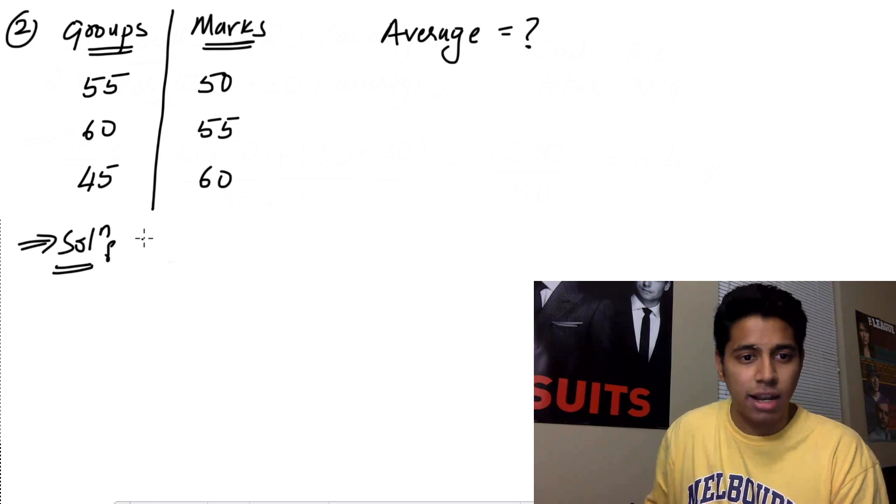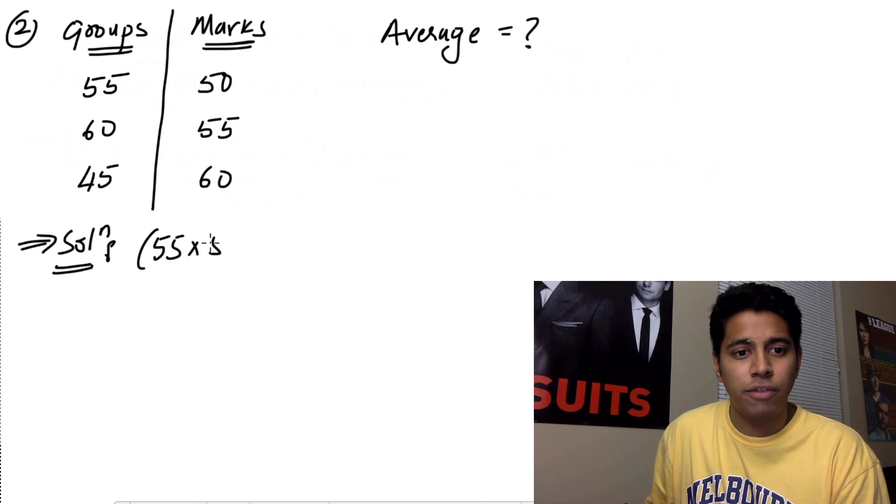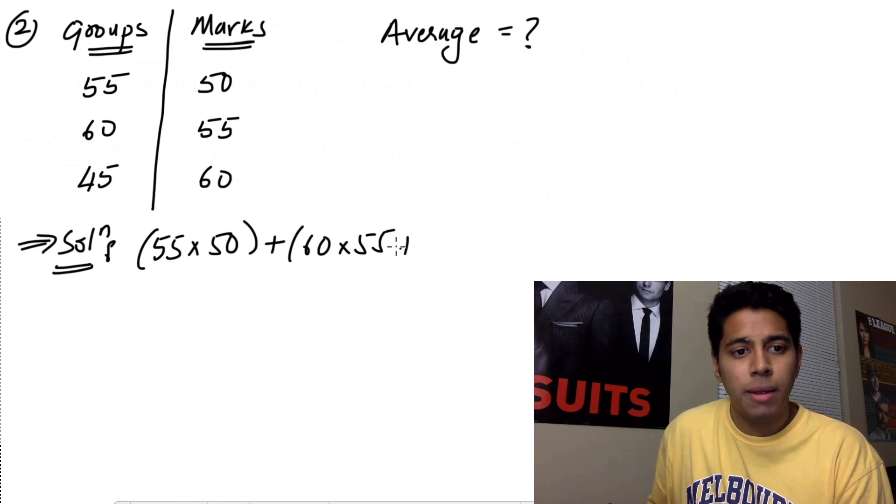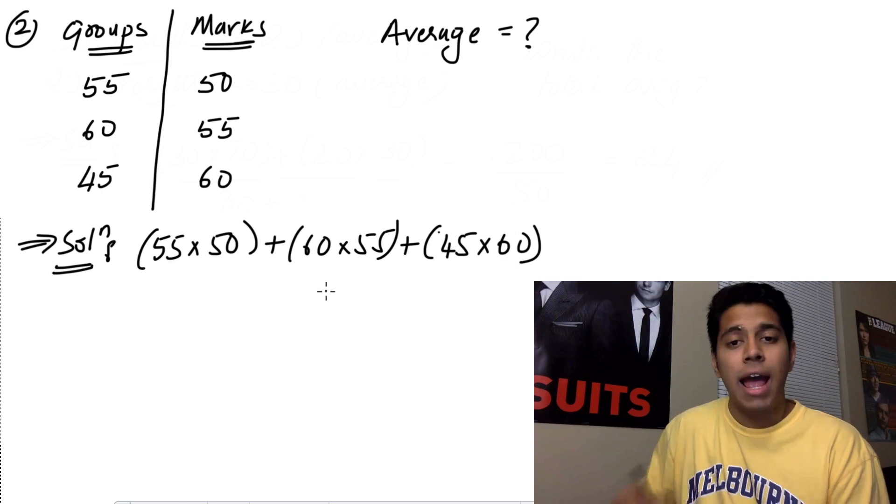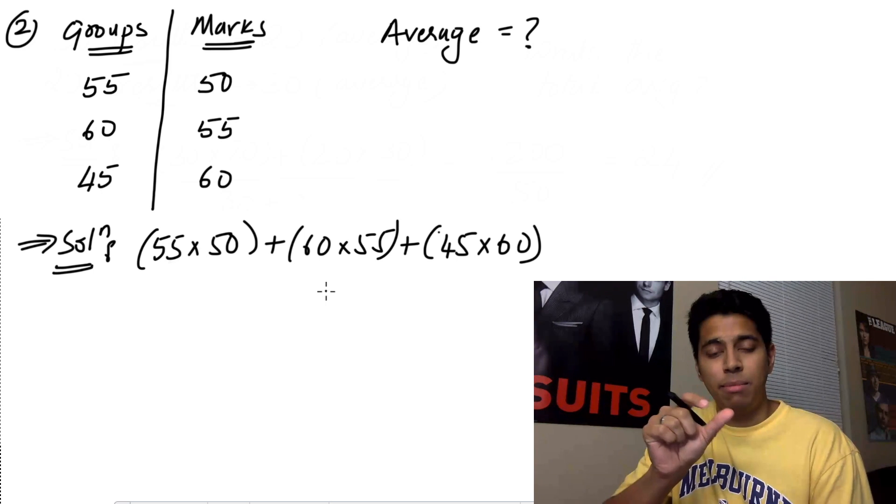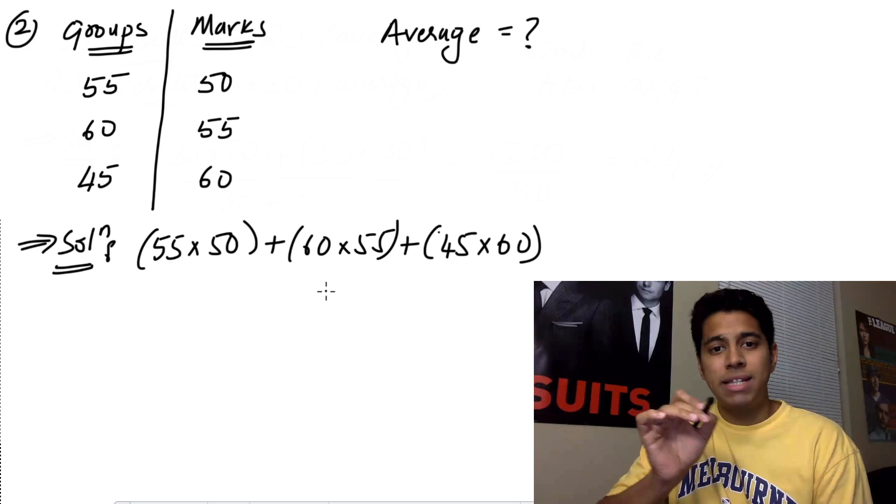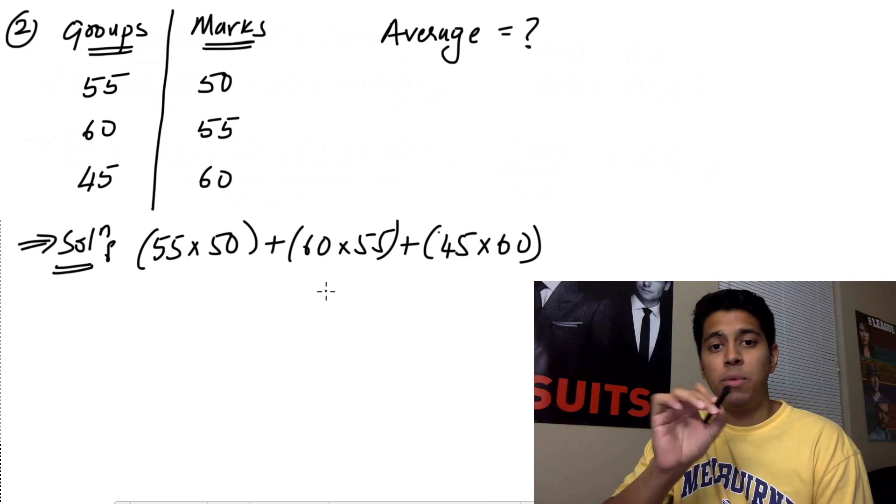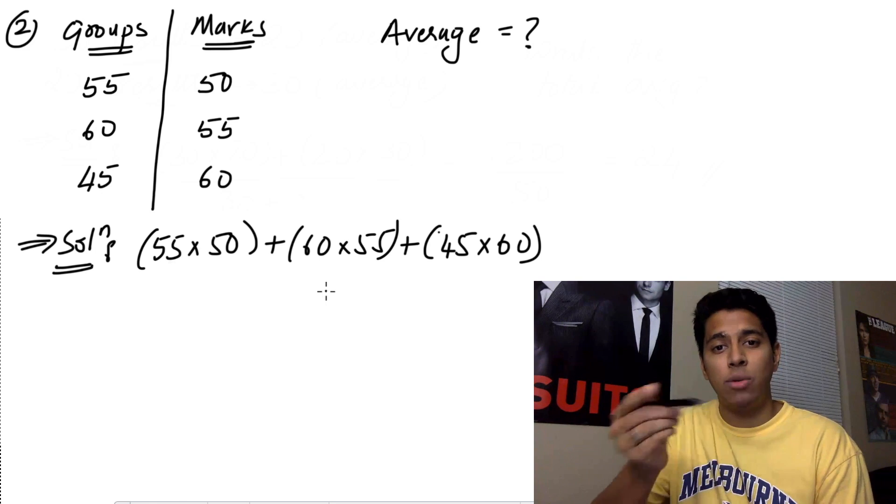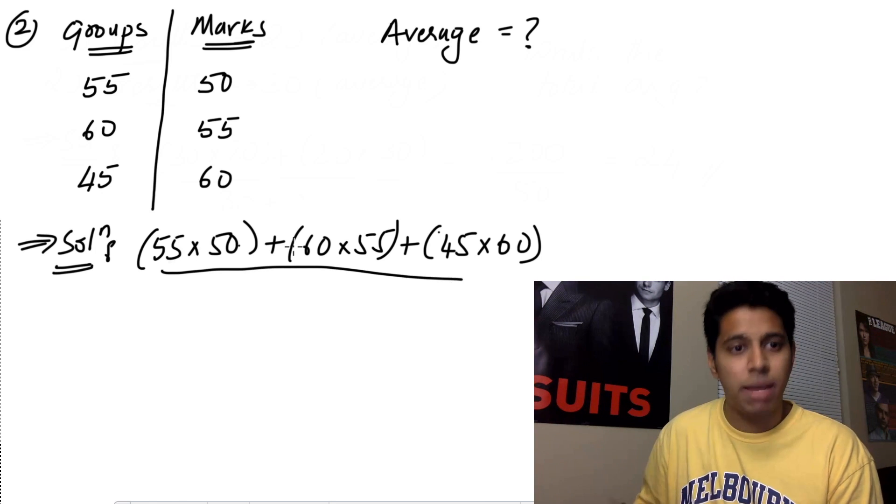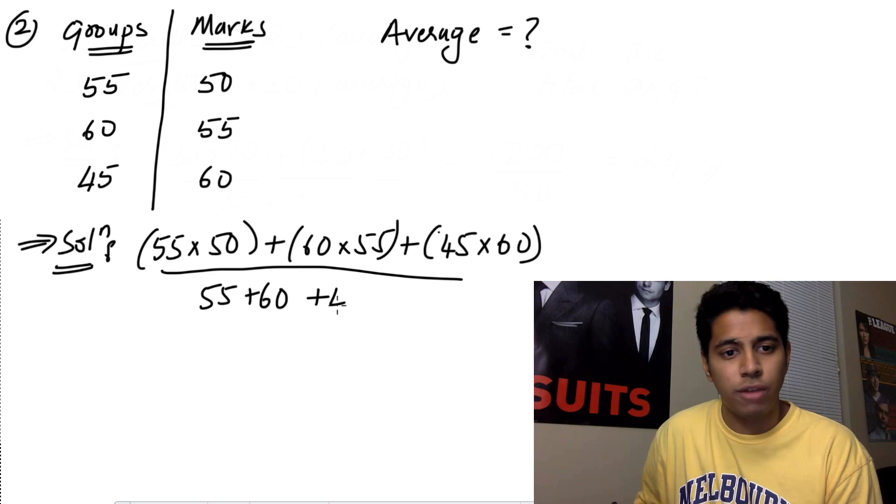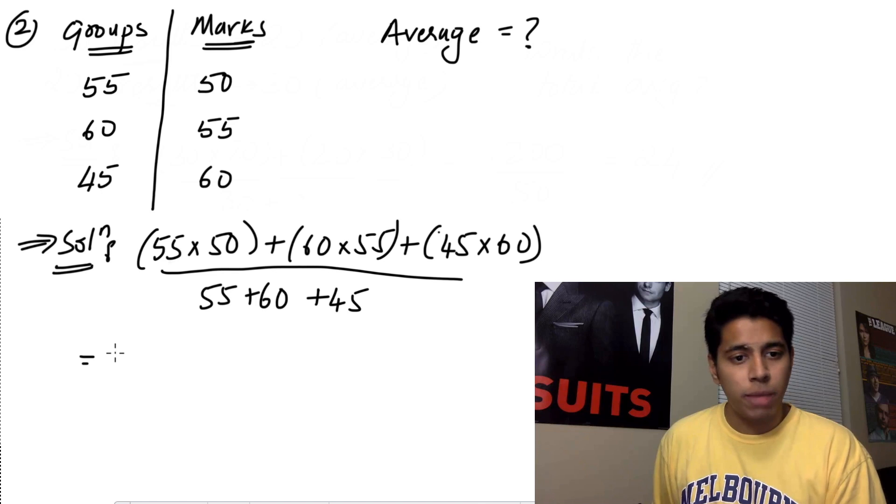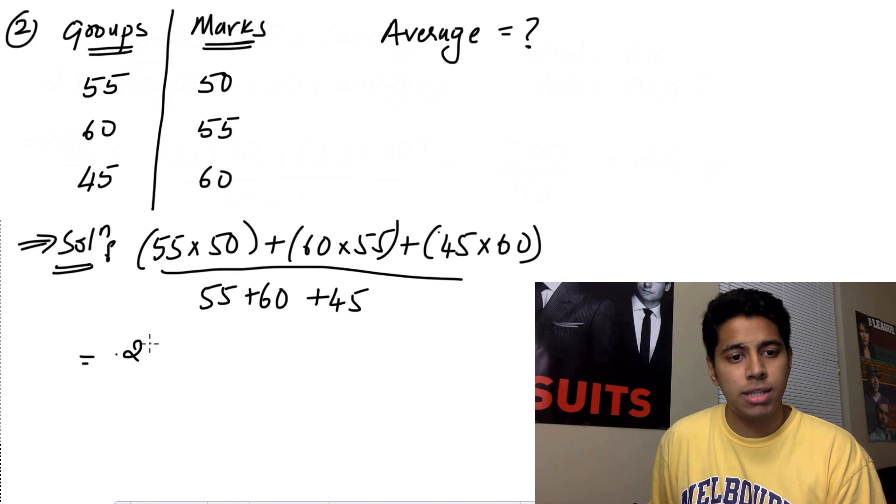So let's just solve it and clear the doubt. So you have 55 into 50 plus 60 into 55 plus 45 into 60. And make sure also that you write these brackets, because sometimes when you're simplifying in a hurry, you might miss that out and you might add numbers there which don't need to be added. First you need to multiply them and then you need to add them individually. So you divide this by the groups. So you have 55 plus 60 plus 45. So this is going to be 55 into 50, so that is 2750.